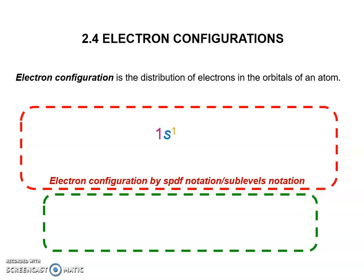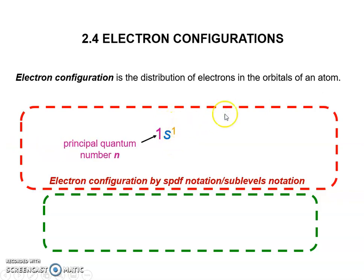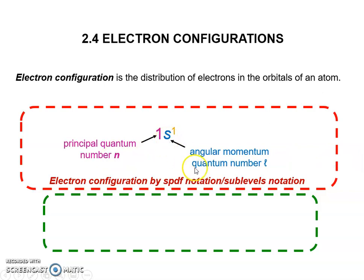The electronic configuration is the distribution of electrons in the orbitals of an atom. Based on the electronic configuration, we have information on: where is the shell of the electron, what is the orbital of the electron, and the number of electrons in the orbital. The number 1 refers to the principal quantum number n; s is the angular momentum quantum number l, which tells us the shape of the orbital; and the superscript number is the number of electrons in the orbital or subshell.